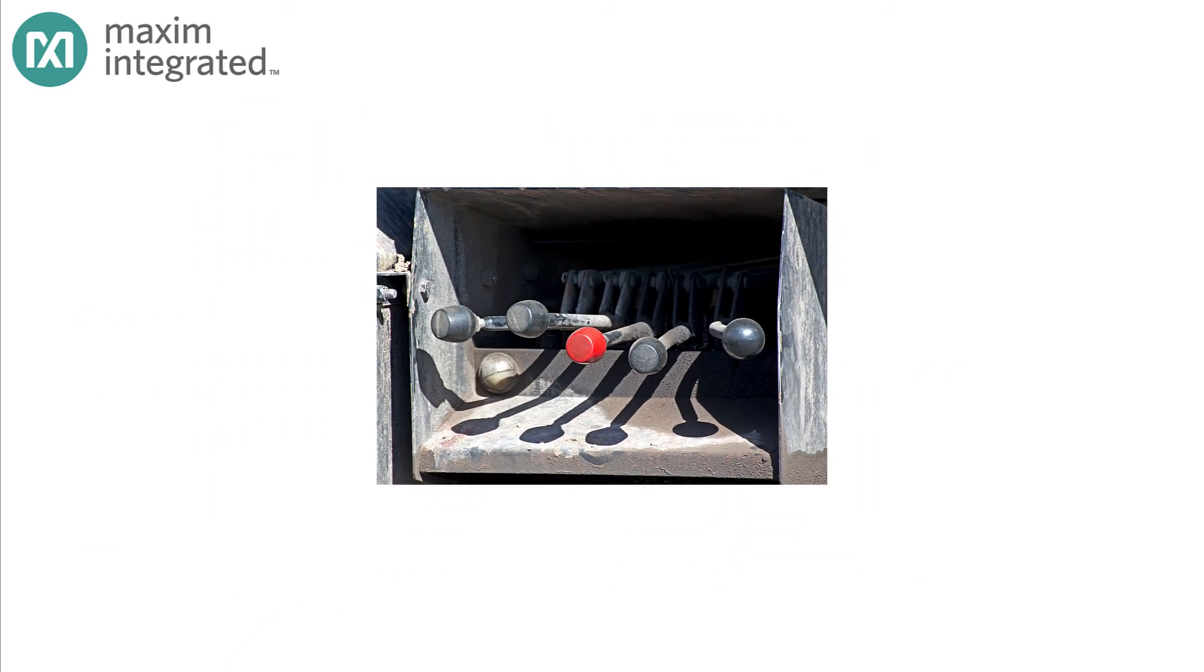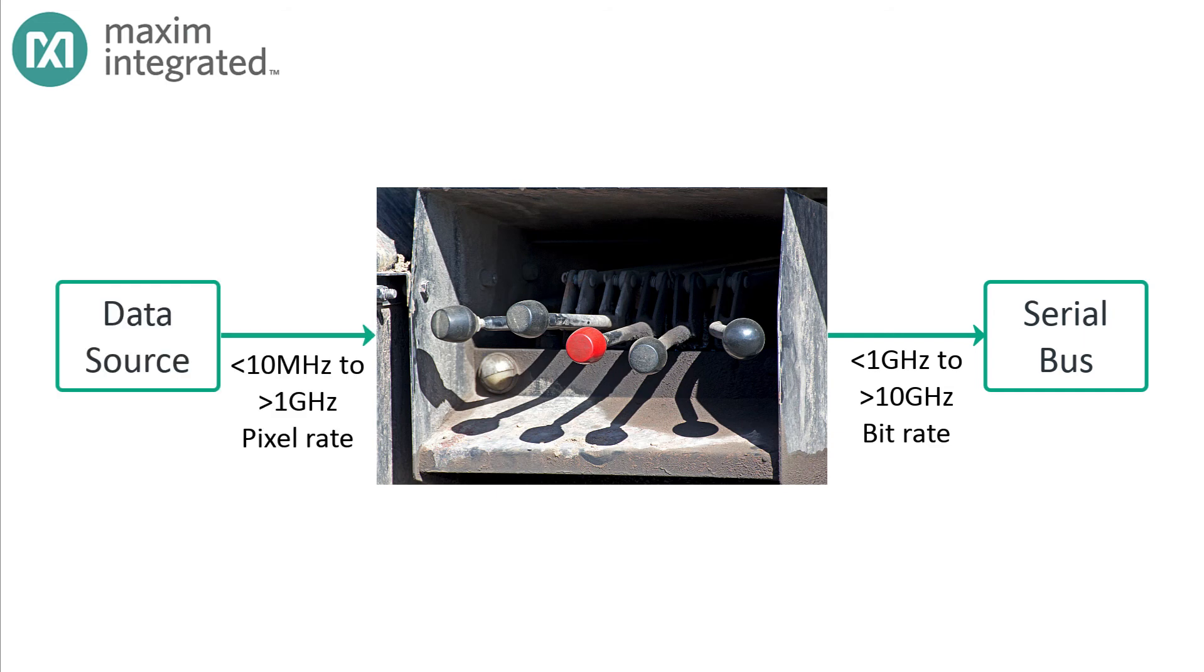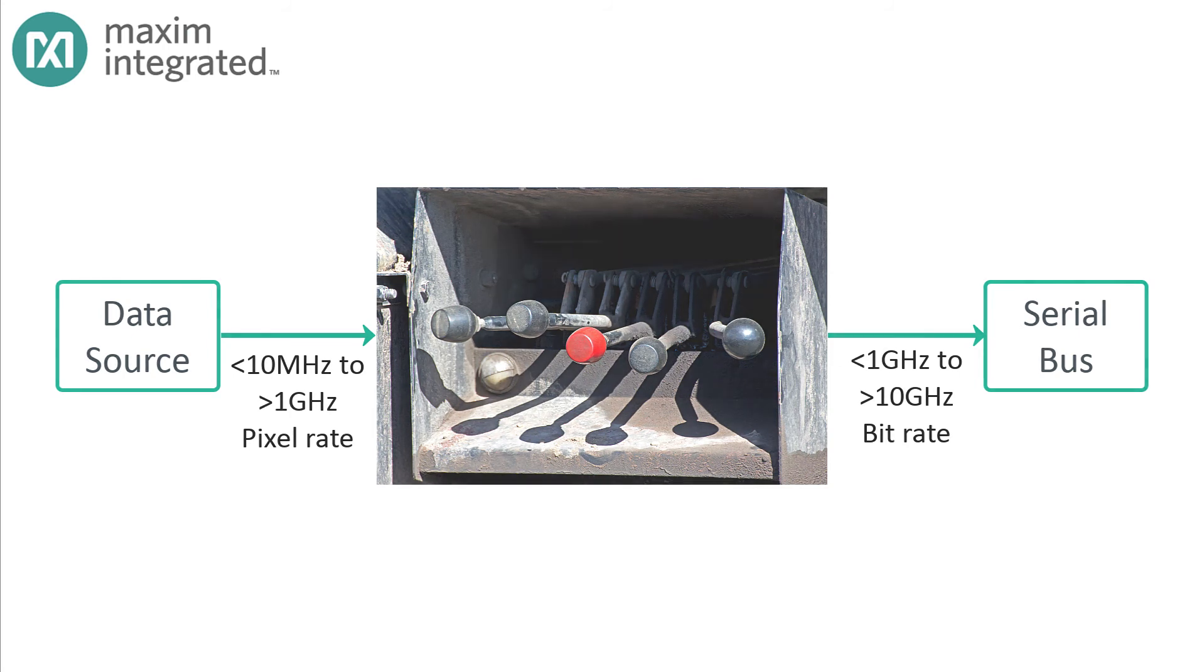So, we have a serial data stream with a fairly narrow range of operating frequencies, a set of potential video sources that have wildly varying pixel rates, and 6 levers to help manage it all. Let's put it all together, shall we?